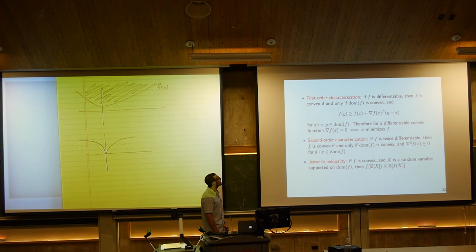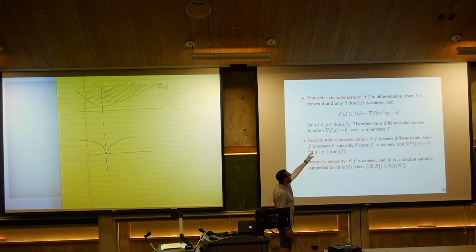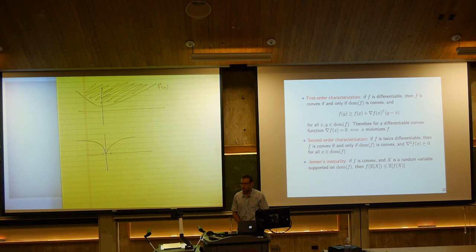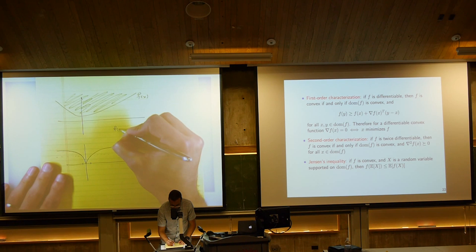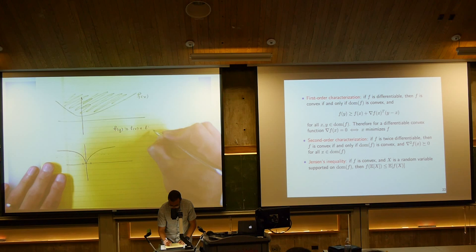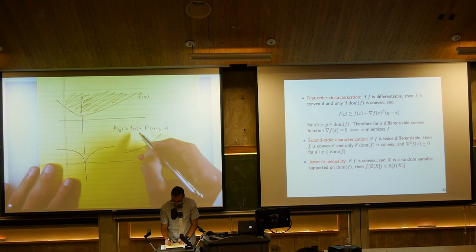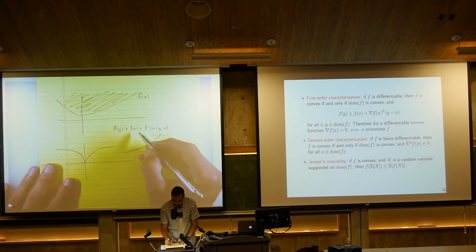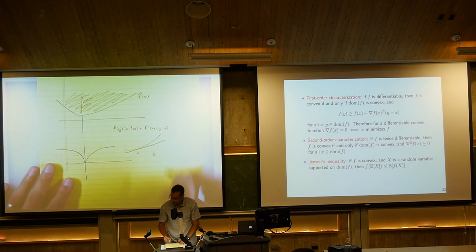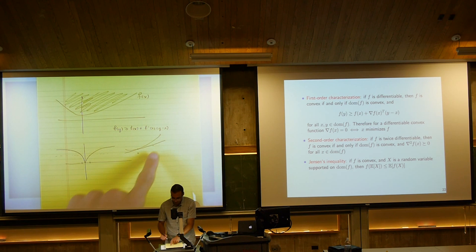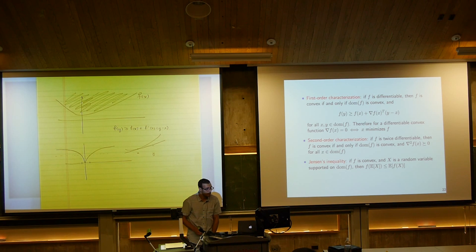In one dimension this says that if we take any point x and draw the tangent line through x, the function evaluated at y must lie above the tangent line — that's a necessary and sufficient condition for convexity. If we have strict inequality (for y ≠ x), that's equivalent to strict convexity.